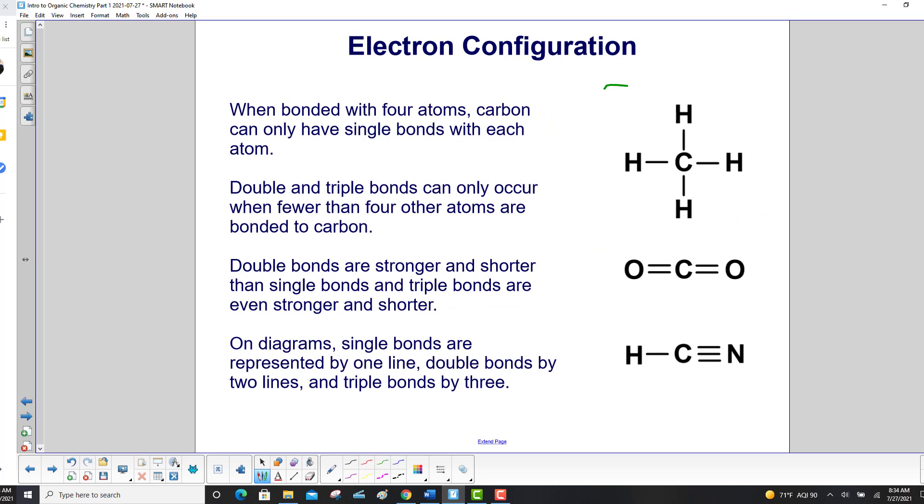When bonded with four atoms, carbon can only have single bonds with each atom. Double and triple bonds can only occur when fewer than four other atoms are bonded to carbon. Double bonds are stronger and shorter than single bonds, and triple bonds are even stronger and shorter. On diagrams, single bonds are represented by one line, double bonds by two lines, and triple bonds by three. Or in the ball and stick model, they have one, two, or three sticks between the atoms.